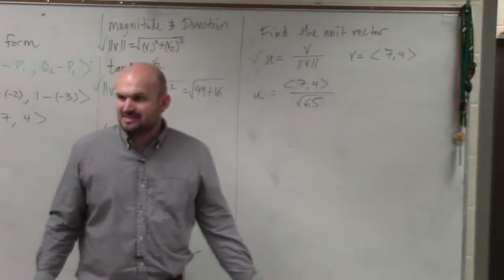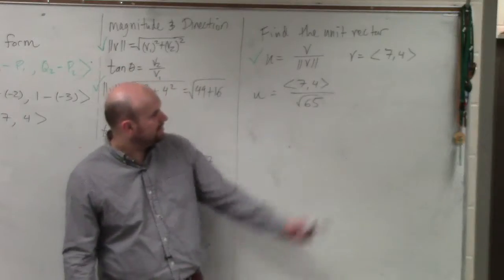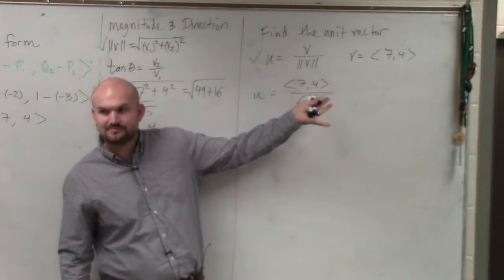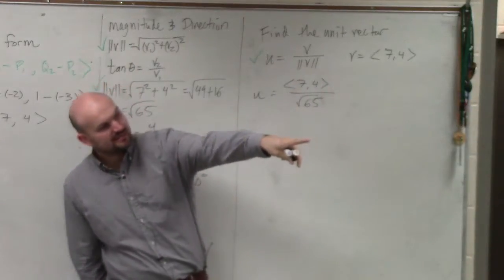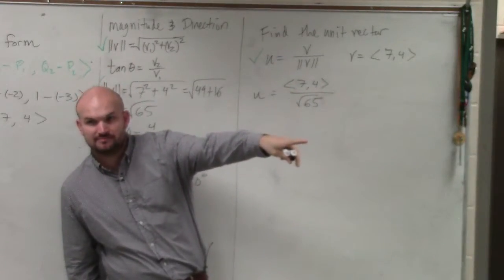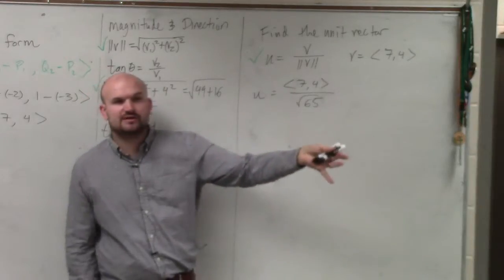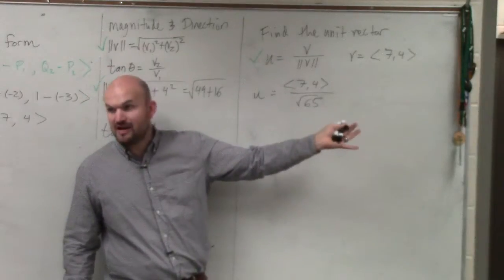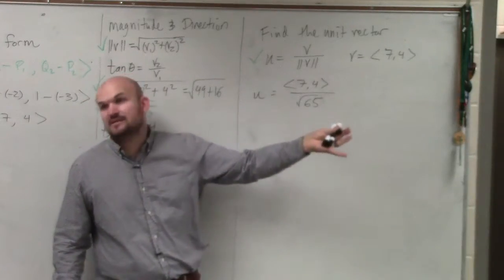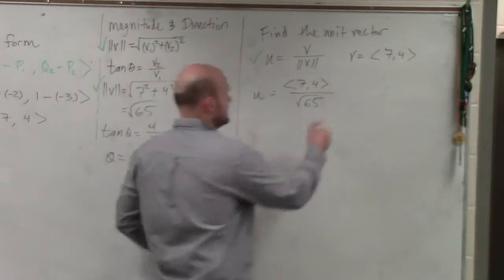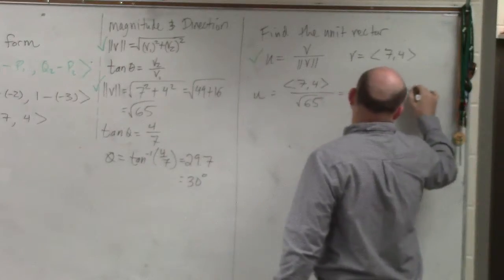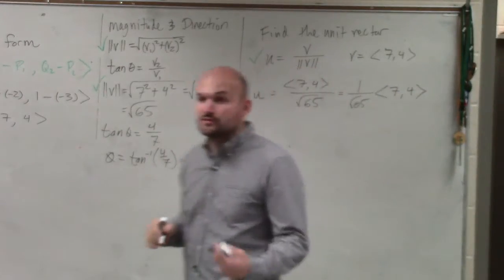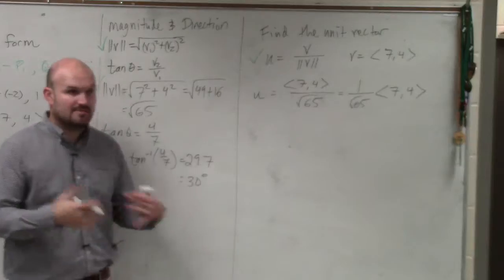But how can we kind of simplify this? Well, again guys, think of a vector. It basically has two components, v1 and v2. And the other thing I want you guys to think about is think about that scalar that we did over there. So you guys would agree dividing is the same thing as multiplying by a fraction, right? Dividing by 2 is the same thing as multiplying by 1 half.